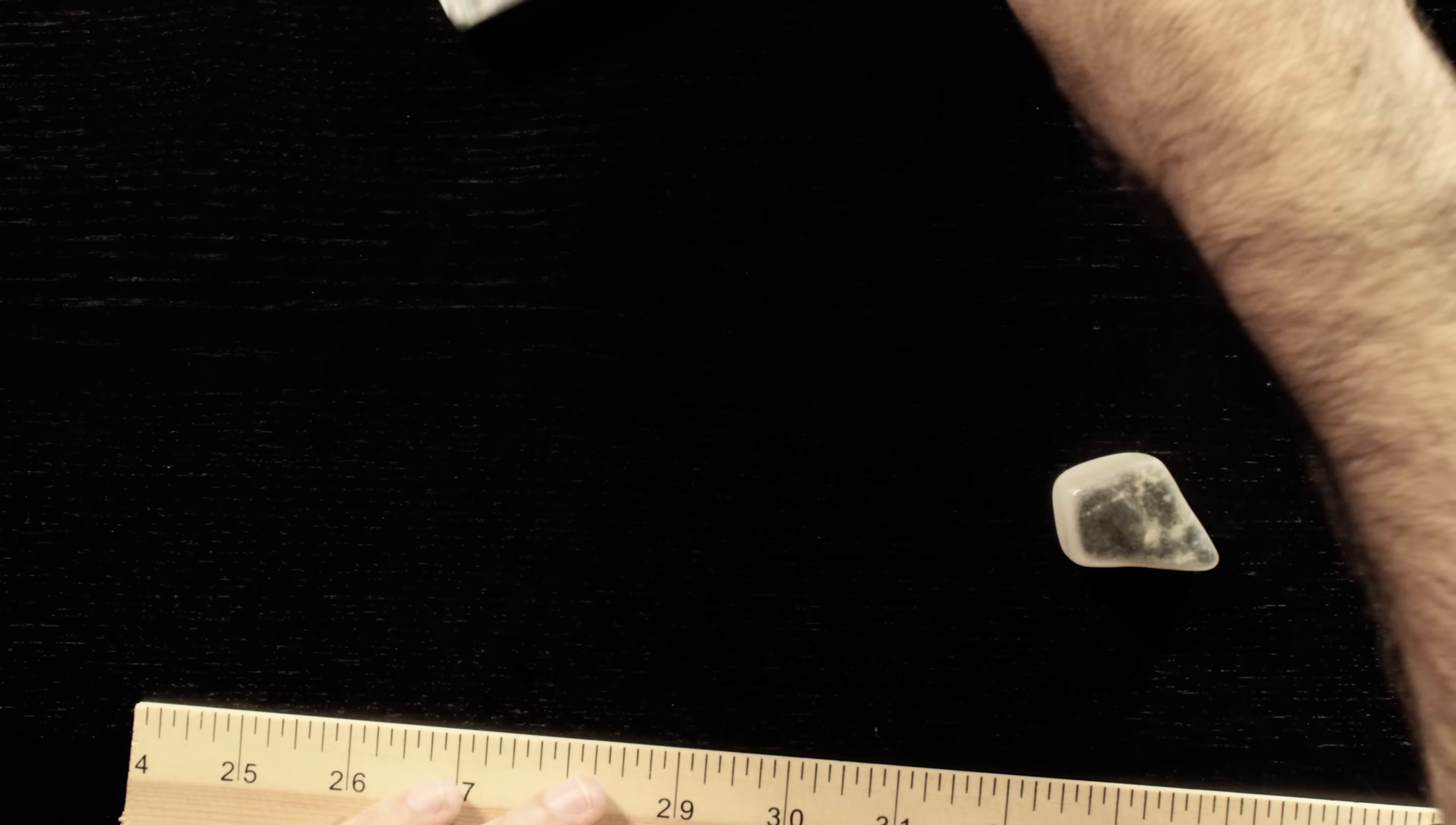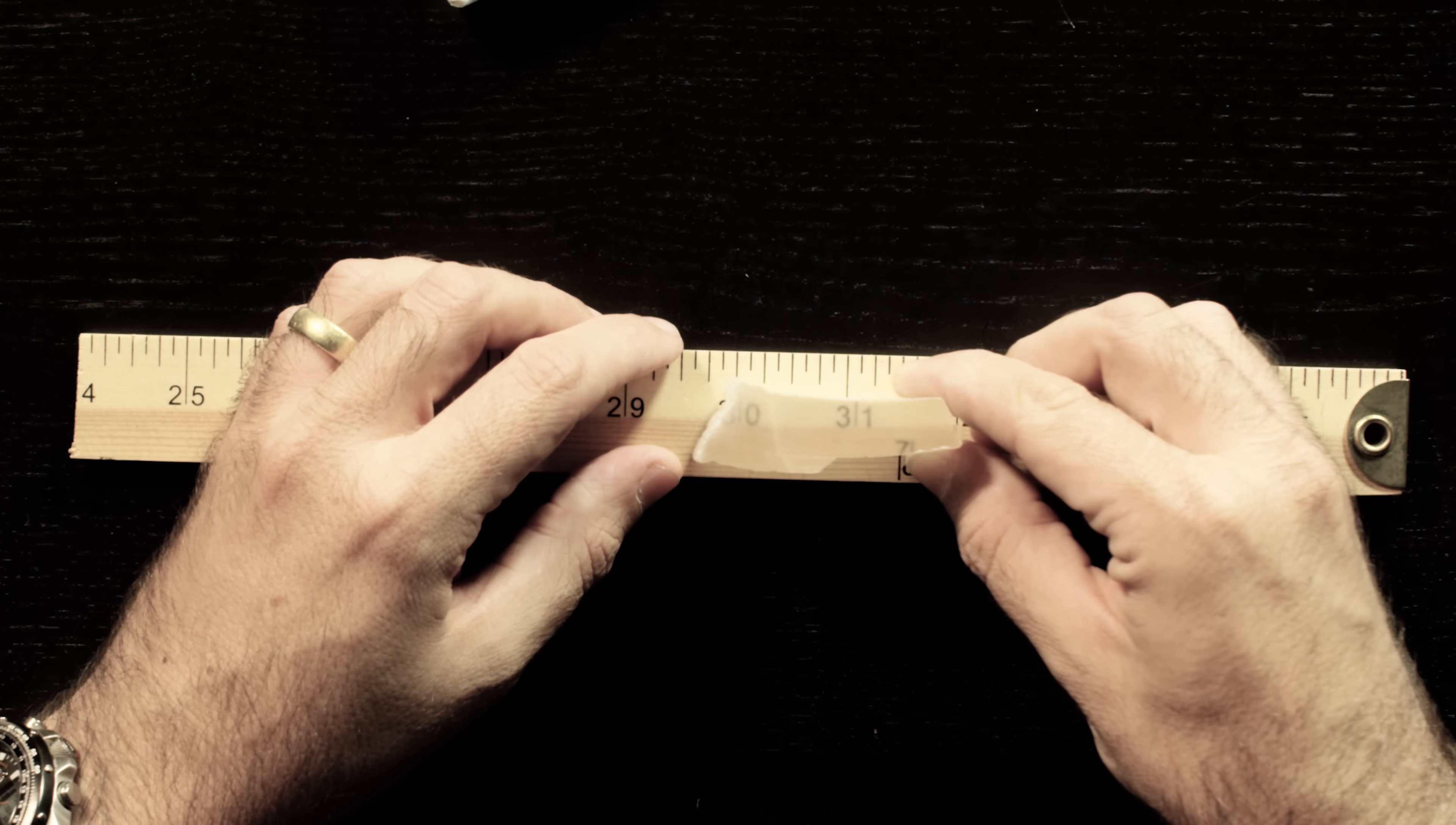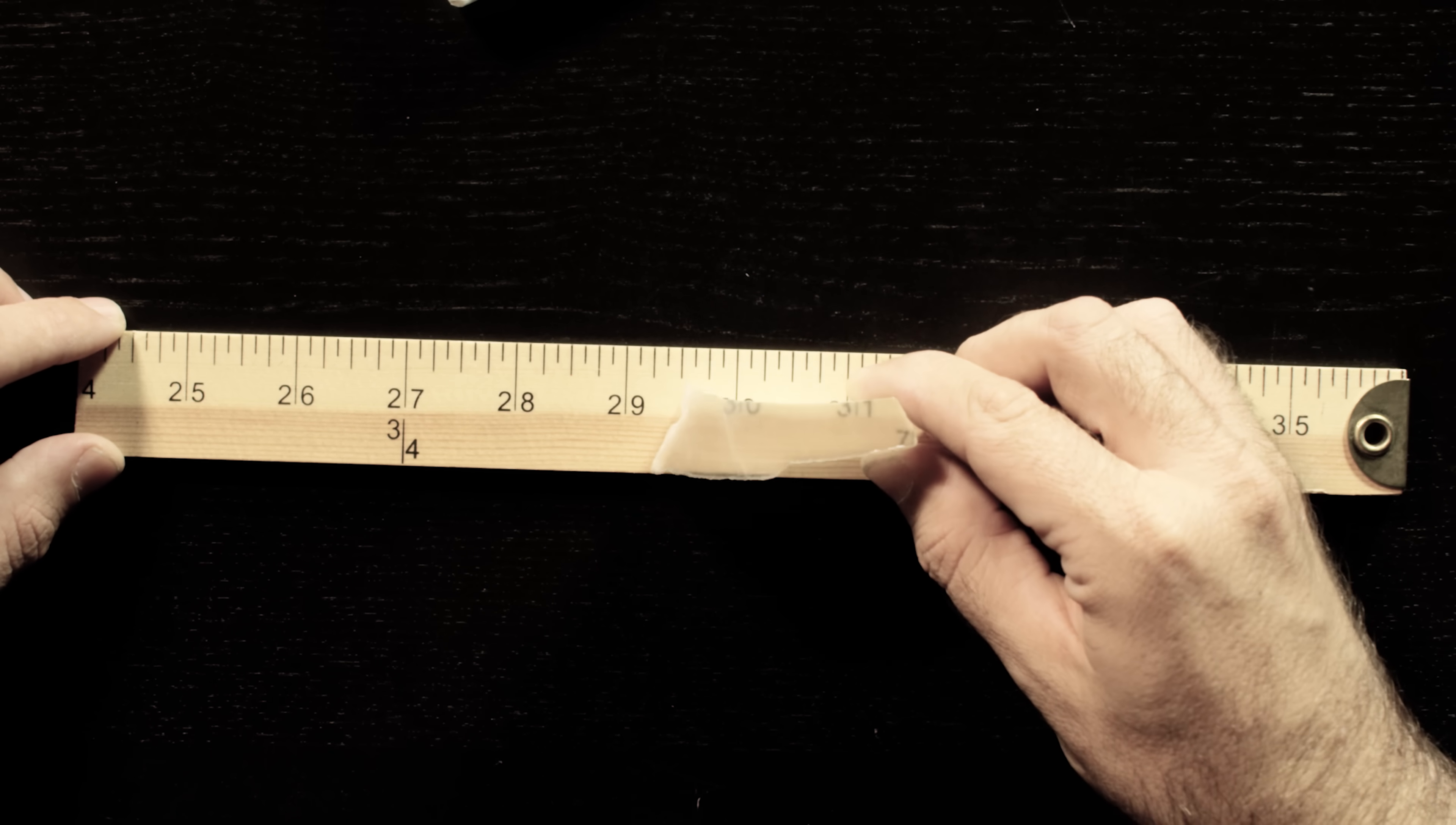For this reason, looking through the mineral isn't like looking through something that's transparent. Instead, an actual image of what is below is created on top. Ooh, yeah, look at that. Here's the selenite, and there's the image.